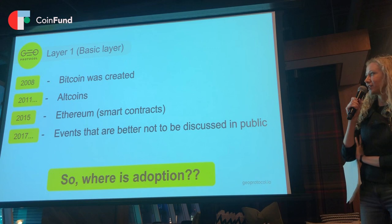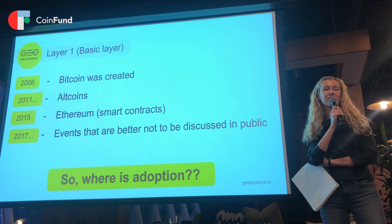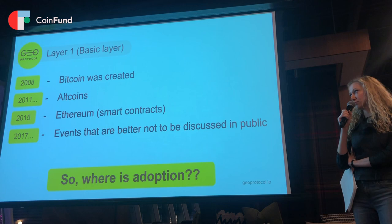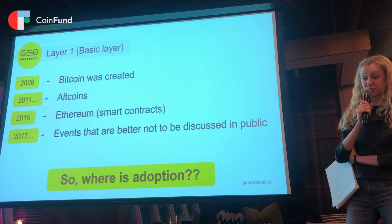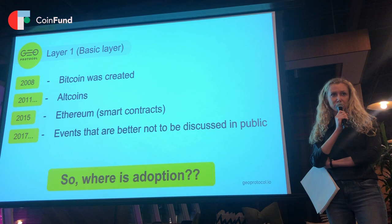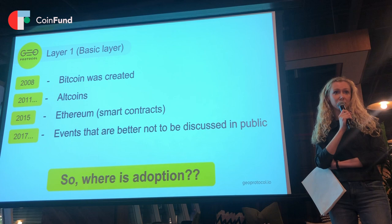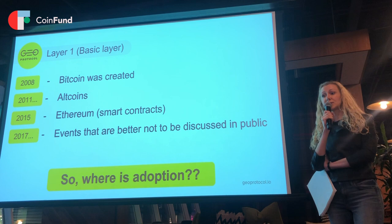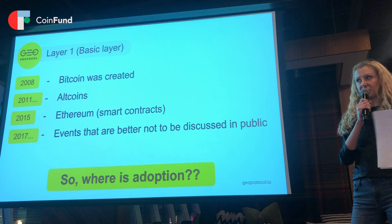Over the past years, we have witnessed the emergence of revolutionary technologies, the evolutionary significance of which is yet to be fully recognized — such as the launch of Bitcoin, introduction of altcoins, issuance of first smart contracts, and the creation of the internet of value as we know it today. All of that is referred to as layer one technologies — the foundational technologies — whose economic function is value creation, and whose technological function is ensuring the possibility to transfer and account for all assets.